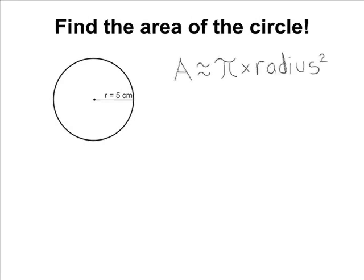To find the area of any circle, we can use the formula A is approximately equal to pi r squared. Specifically, A stands for area. The two squiggly lines means approximately equal to, the pi symbol is always going to represent the decimal 3.14.